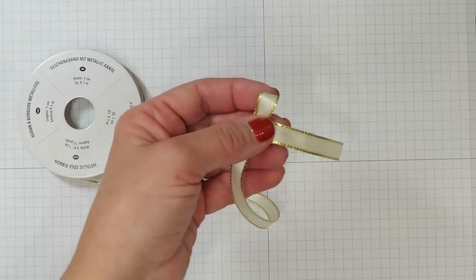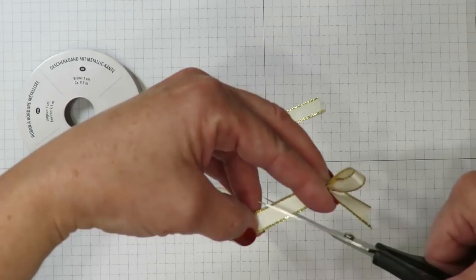And what we can do is we can come in with our scissors and we can trim up our ends. And I'd like to trim mine on an angle that helps not only to make it look a little prettier but it keeps those ends from fraying.